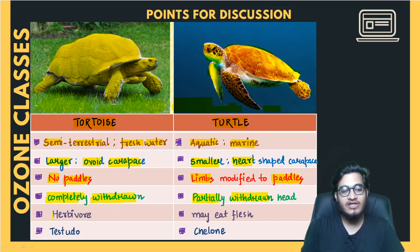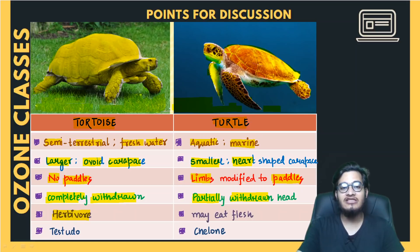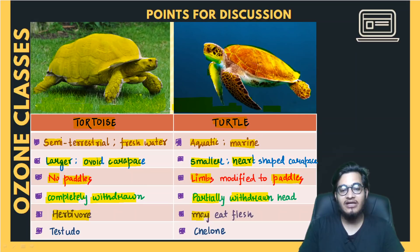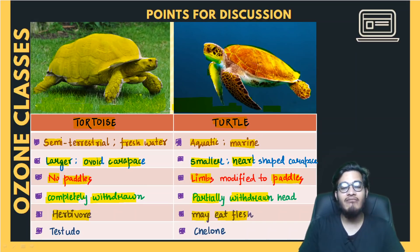The tortoise is herbivorous in nature — it lives by eating grass and leaves. It is a very cute animal. But if you look at the turtle, it may eat flesh — it can be herbivore but it also gives priority to meat and can consume flesh.